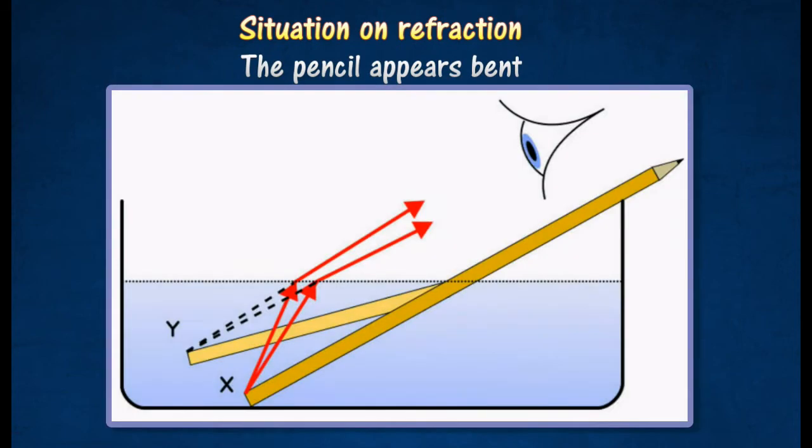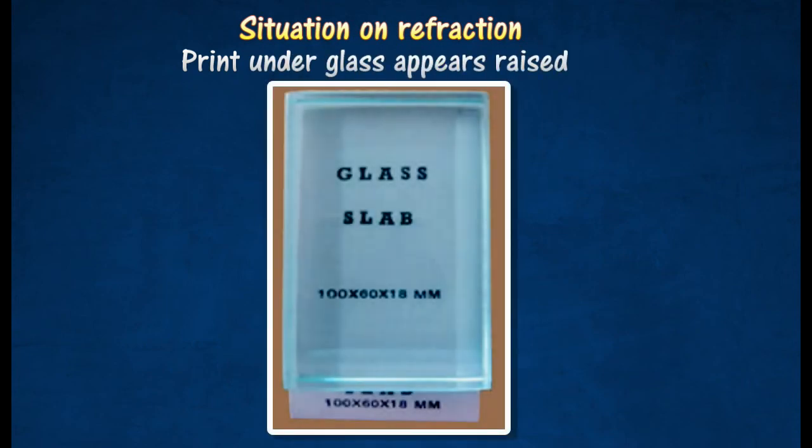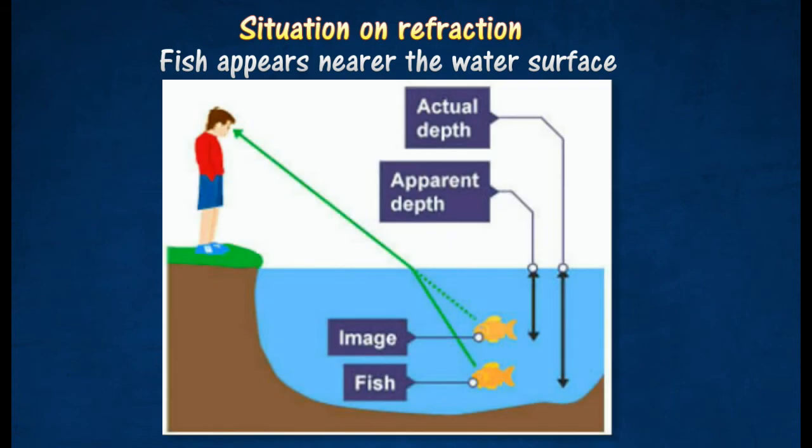Here are a few situations involving the refraction of light. A pencil appears bent when it is partially immersed in water. Printed letters covered with thick glass appear raised when viewed obliquely through the glass. Similarly, a fish appears nearer the water surface than it really is.